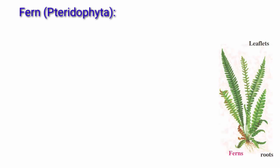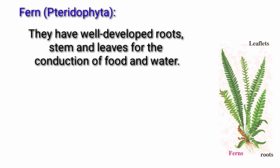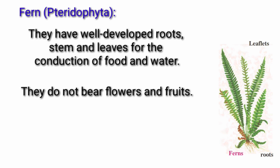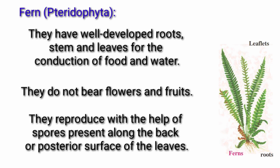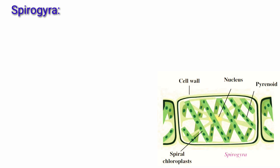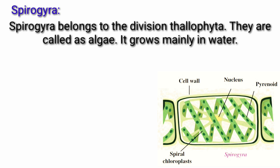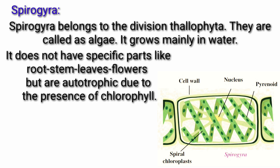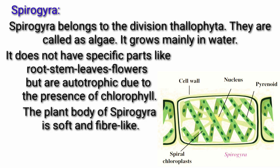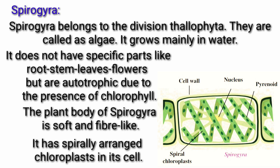Pteridophyta — Fern: The figure is given below. They have well-developed roots, stem and leaves for the conduction of food and water. They do not bear flowers and fruits. They reproduce with the help of spores present along the back or posterior surface of the leaves. Spirogyra: The figure is given here. Spirogyra belongs to the division Thallophyta and is called algae. It grows mainly in water. It does not have specific parts like roots, stem, leaves or flowers, but is autotrophic due to the presence of chlorophyll. The plant body of Spirogyra is soft and fiber-like with spirally arranged chloroplasts.